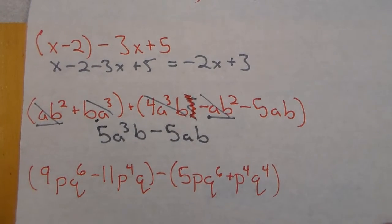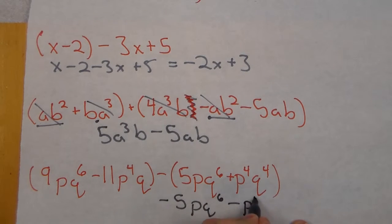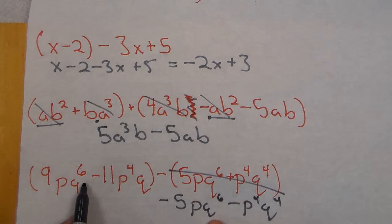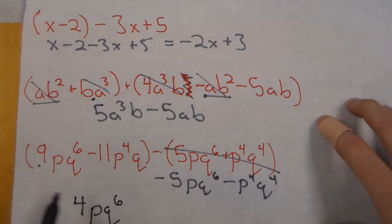Our last one I have negative here. So I'm just going to change these signs. So I'm careful with those. So I have a pq⁶ and here is a pq⁶. It's nine minus five. That's going to give me 4pq⁶.